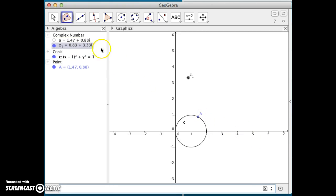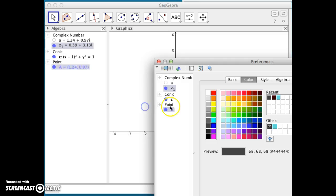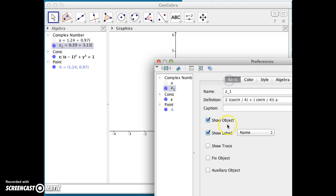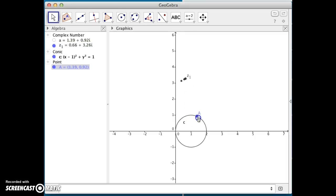If I take point A and drag it around the circle, I can see where Z1, where it maps to. So, it looks like this circle region C, region 1, is mapping to another circle. I can trace this point, show the trace, and now I trace out, and I can see what that circle is.